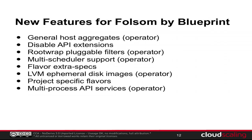Multiprocess API services: in the past, API services all ran on a single core because even though there was parallelization, it was all running inside one process. Now you can have one API service endpoint running on as many cores and as many OS processes as you choose.